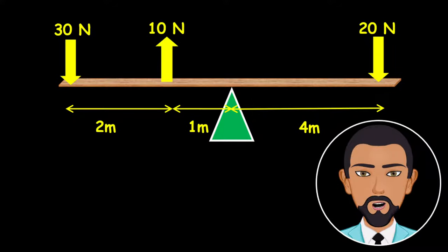To answer this question, the first thing you need to do is to identify the direction of the forces. The 30 newton force is considered to be going downwards. The 10 newton force is considered to be going upwards. The 20 newton force is going downwards. And that of a pivot is going upwards.